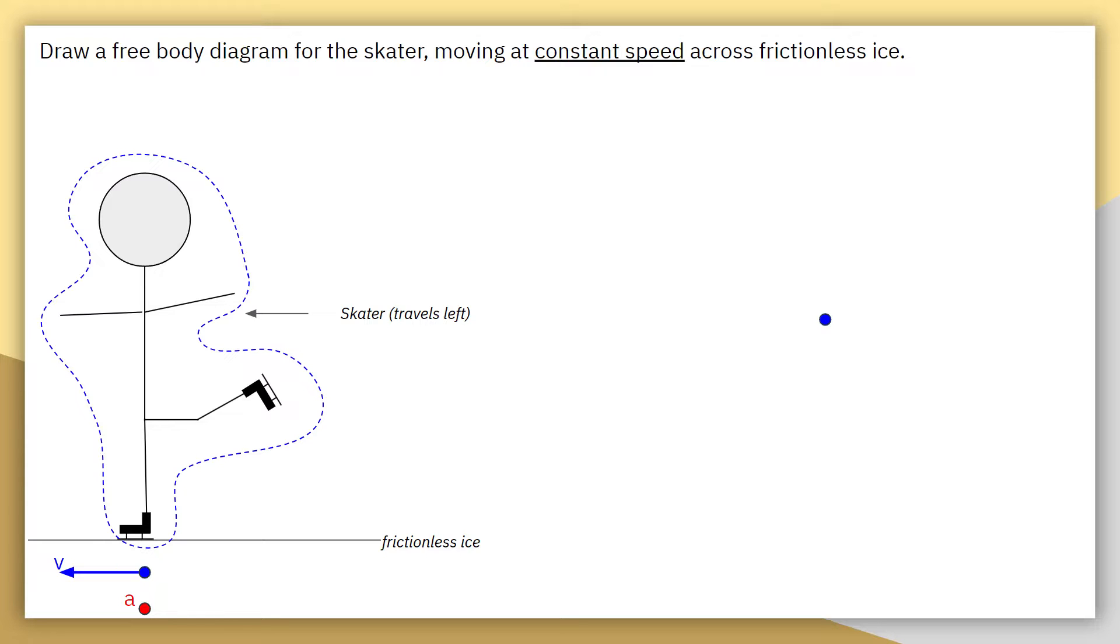I have shrunk that system down to a single dot. So that way, instead of trying to deal with center of mass or figuring out how forces affect different parts of the system, we're just saying what effect on the system as a whole do we have? That's why we shrink it down to that single dot.